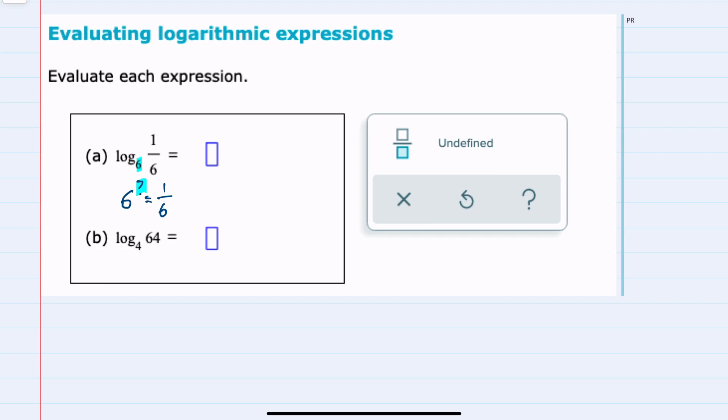We are looking to find that exponent, and the relationship between 6 and 1/6 is pretty straightforward. 6 raised to the negative 1 power would give us 1 over 6. That power would have to be negative 1. So our logarithm simplifies to negative 1.